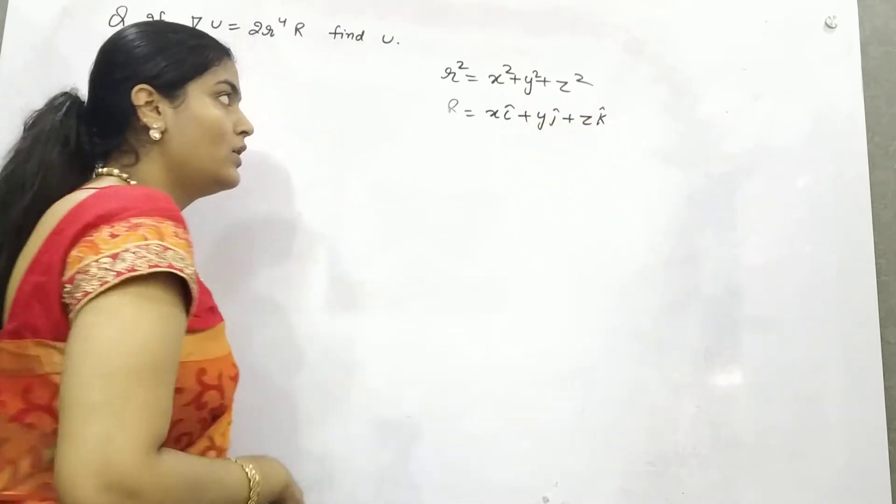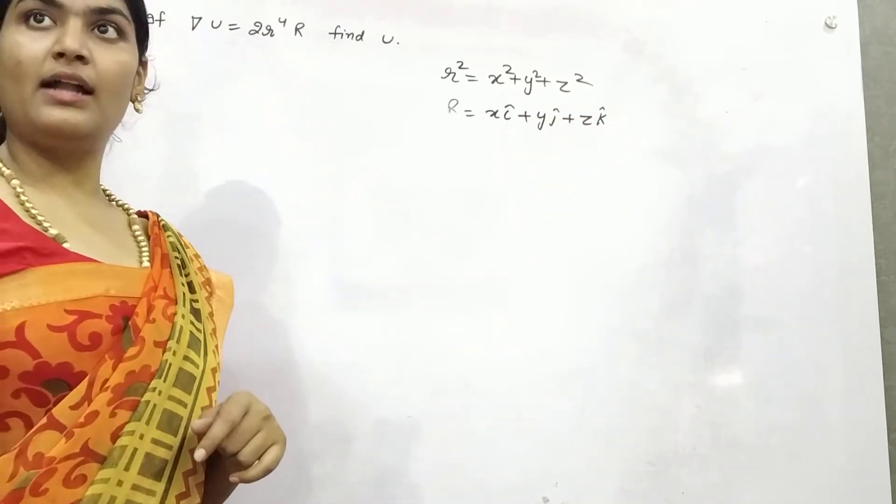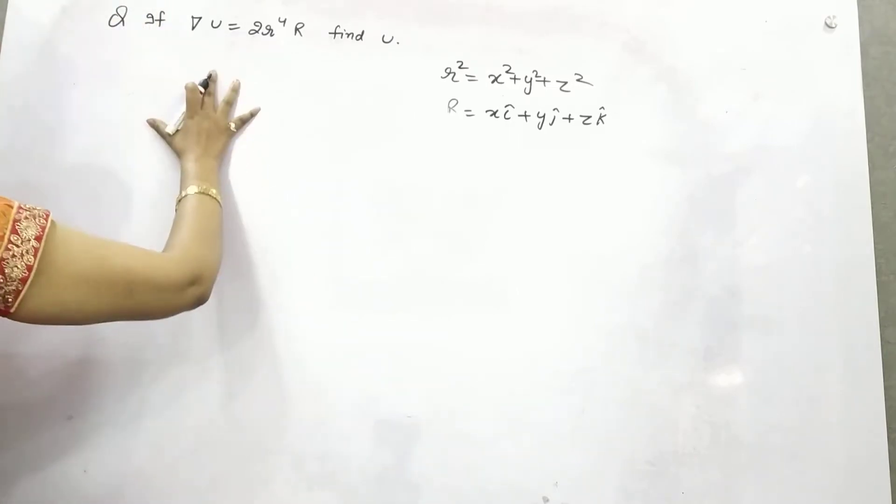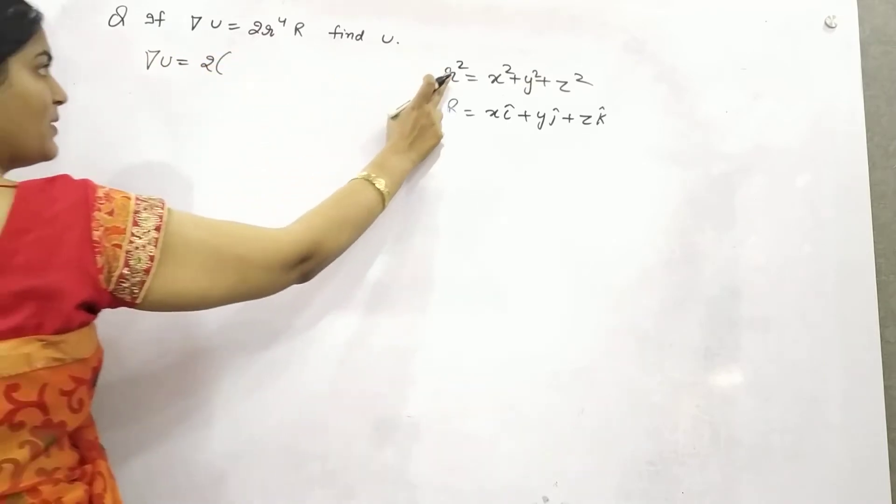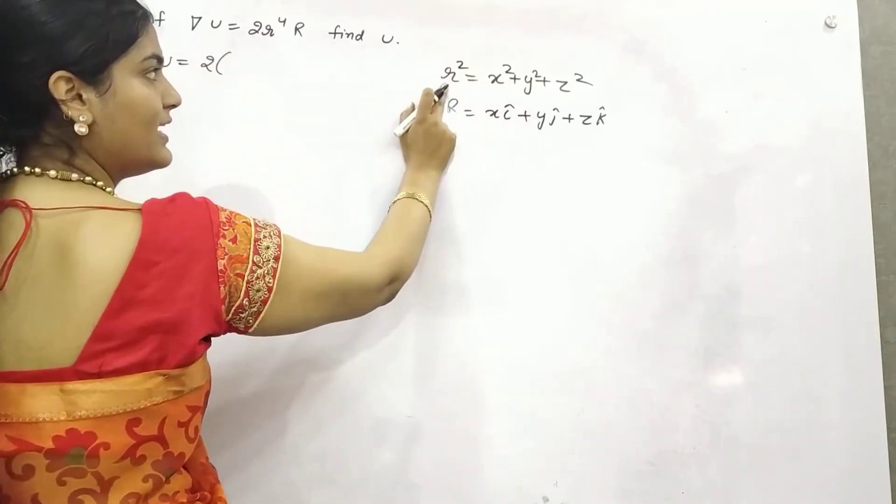You need to find out exactly that function whose gradient is given to you. If you put all these values, r^4 means squaring both sides will get r^4, so (x² + y² + z²)².